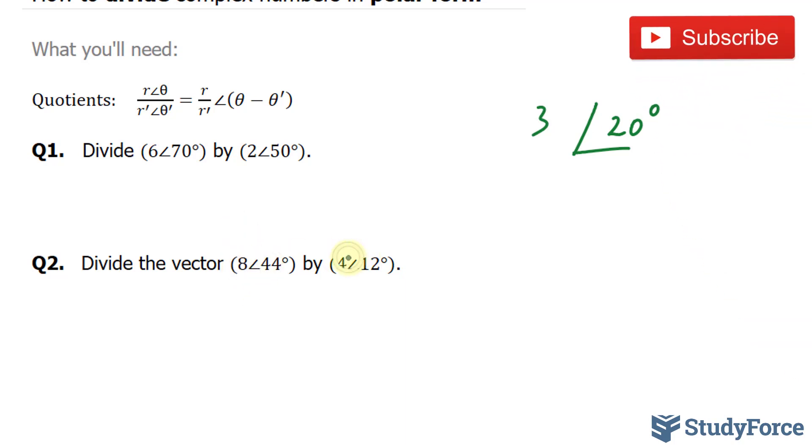Once again, I'm going to divide 8 and 4 together, that gives me 2. 44 minus 12 is 32. And this is your final answer.